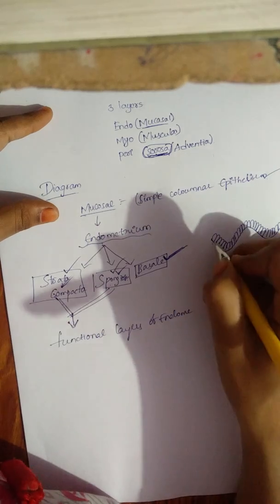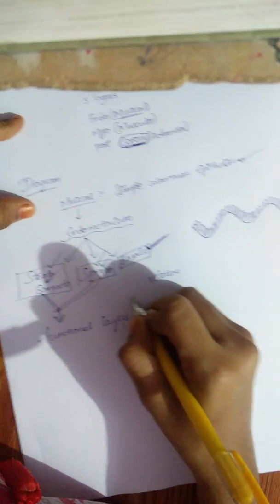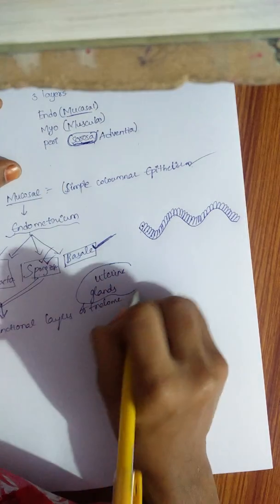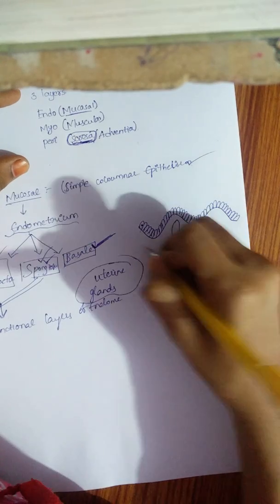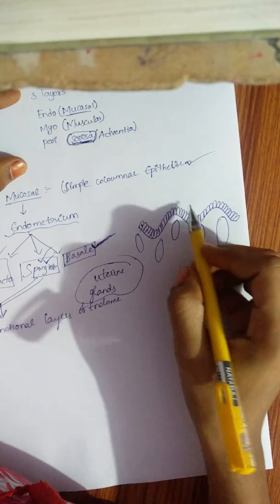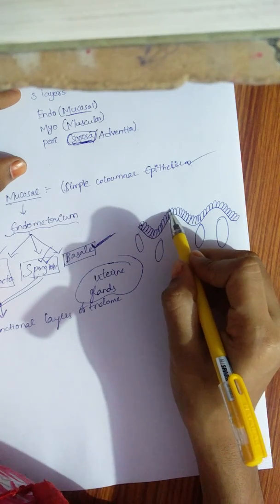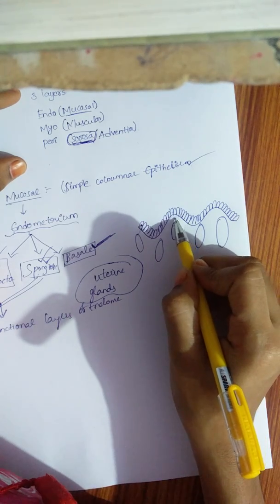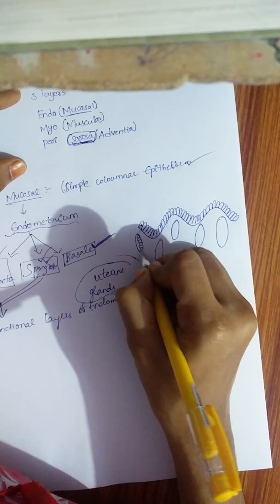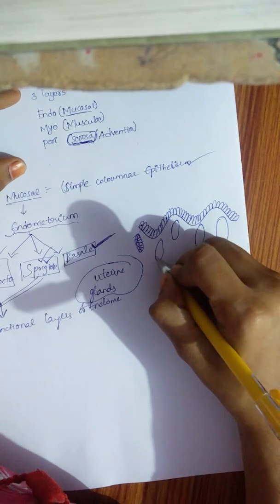Uterine glands are also present in the endometrium, lined by simple columnar epithelium. These uterine glands are formed by the invagination of the lining epithelium. The invagination of the lining epithelium gives rise to the uterine glands, which are lined by simple columnar epithelium with cilia.